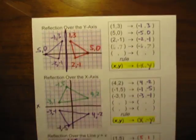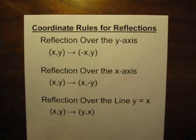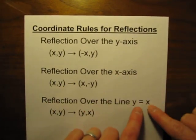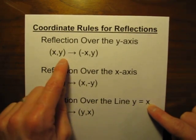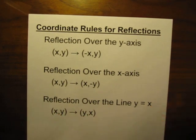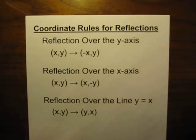So we can go back now to our original summary. The rules when reflecting over the y-axis, the x-axis, or the line y equals x: here are the general rules that any coordinate will follow for those three reflections. Hopefully that makes sense, hopefully that will help you out, and hopefully you will find success. Good luck.